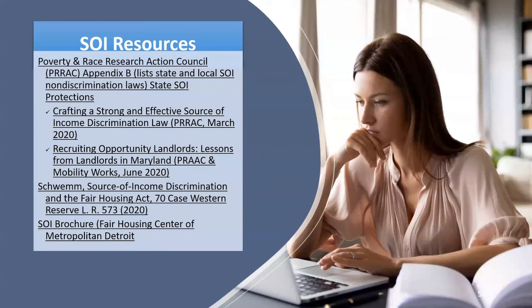On source of income resources: PRRAC's Appendix B collects all state and local source of income non-discrimination laws, has guidance for drafting an effective source of income discrimination law, and has lessons from recruiting opportunity landlords in Maryland showing what has happened when states adopt it — states have not repealed it, it hasn't been that big a problem. Professor Schwamm has a lengthy article on source of income discrimination under the Fair Housing Act. We also have a source of income brochure on our website. I can post the PowerPoint on the website for review.